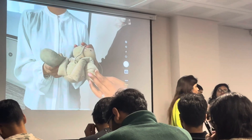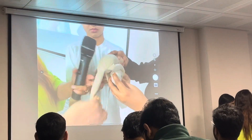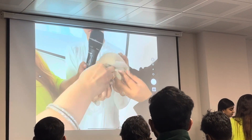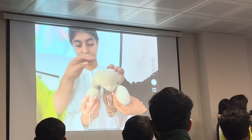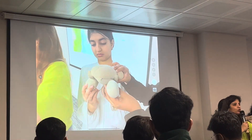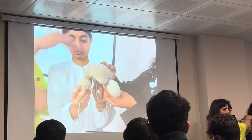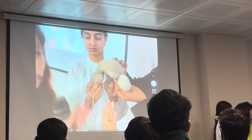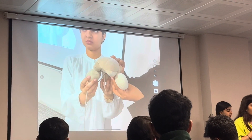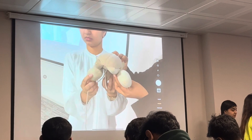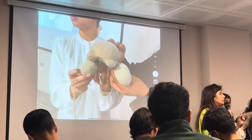If shoulder dystocia is still not relieved, I am quickly going to instruct the mother to lie on all four limbs. I will tell her to turn and be in that position. From the back, I will then try to deliver the shoulder. This is called the all-fours maneuver, or it is called Gaskin's maneuver.